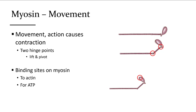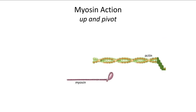Each myosin molecule binds up to an active site on actin, pivots, and pulls. Myosin has a binding site for actin but also a binding site for ATP. ATP is needed to reset myosin after it has lifted and pulled. In a sarcomere, actin is just next to myosin, and there is a specific binding site on the myosin head for actin — and once it lifts and binds to actin, this forms a cross-bridge.